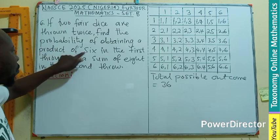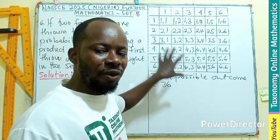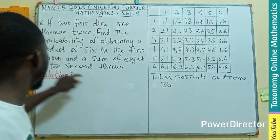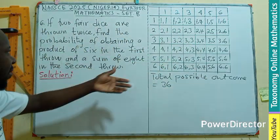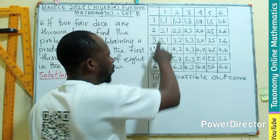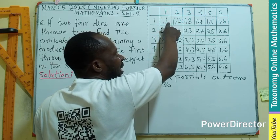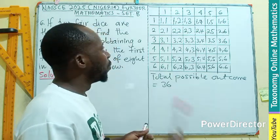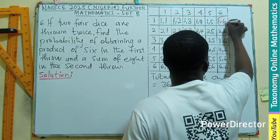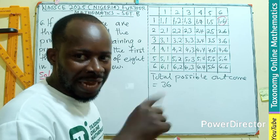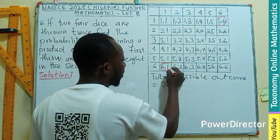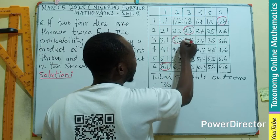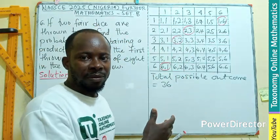Now let's find the events we are looking for. For the first throw, we want a product of six. That means if I take the number from the first die and the number from the second die and multiply them, the result must be six. So we have one times six equals six, six times one equals six, two times three equals six, and three times two equals six.